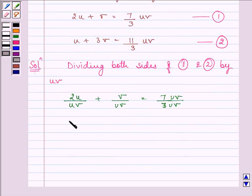Similarly, u divided by uv plus 3v divided by uv is equal to 11 uv divided by 3 uv.